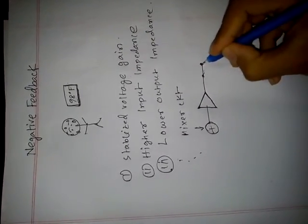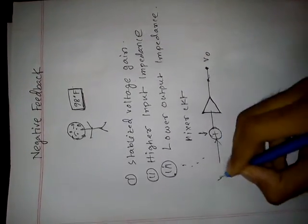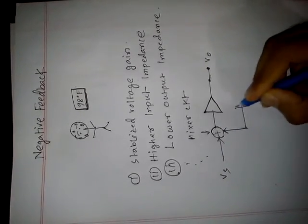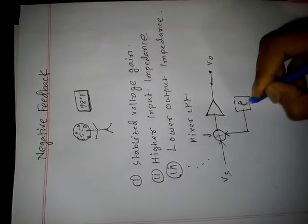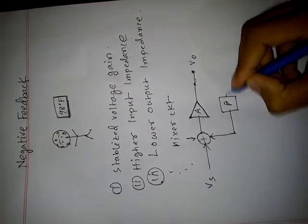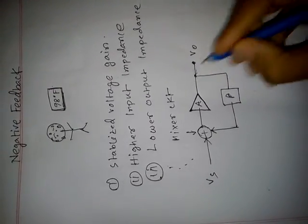Here is the output, here is the input Vs, here is the feedback network beta. The feedback network gain is beta and the amplifier gain is A. Here is the sampling network.